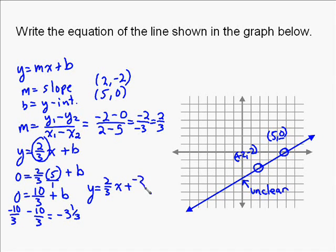It doesn't matter which one you put. I usually like to write it as a mixed number just because it gives me an idea of exactly where it's at. You remember I told you that the y-intercept was between negative 3 and negative 4, and so negative 3 and 1/3, or y equals 2/3 x plus negative 3 and 1/3 is your correct answer.